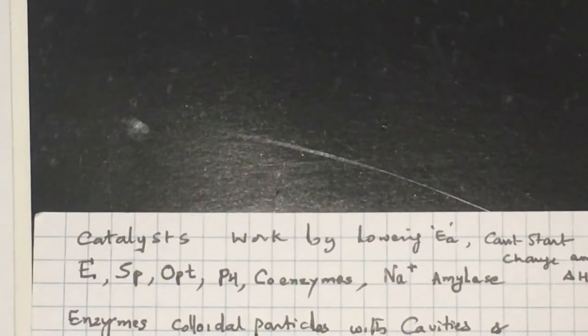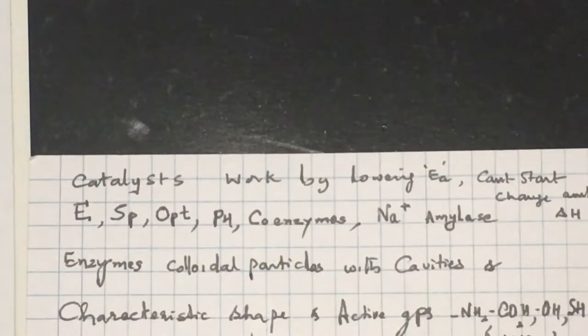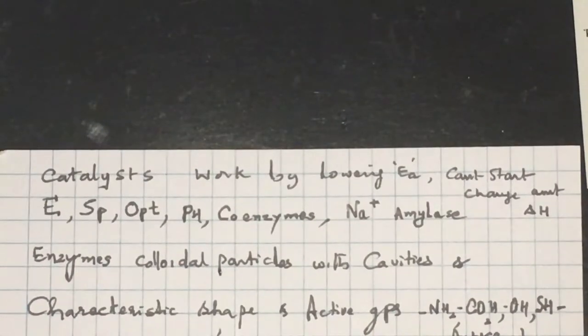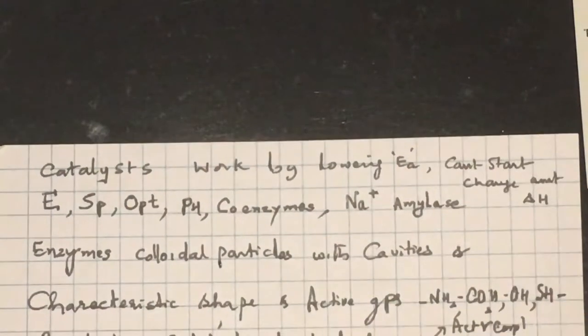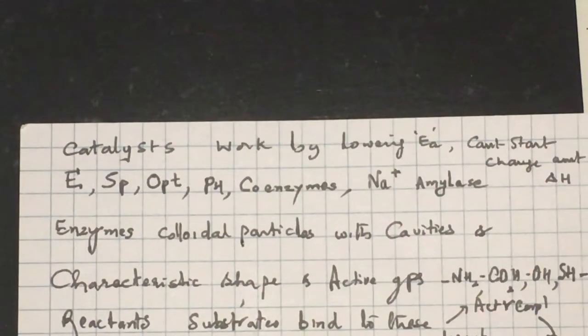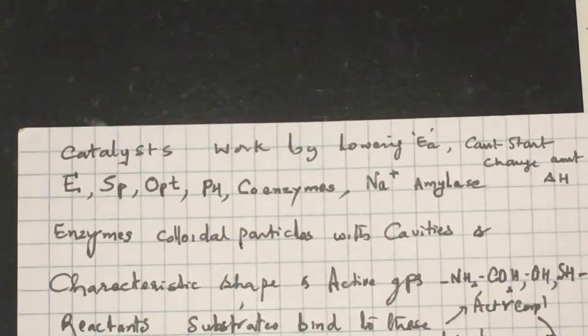Enzymes are colloidal particles. They have certain cavities and a characteristic shape. The active group in an enzyme appears to be either amine group NH2, COOH, alcohol OH group, or thiols SH group. All these sites are active sites of a particular enzyme.